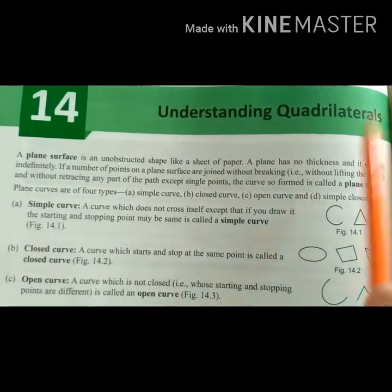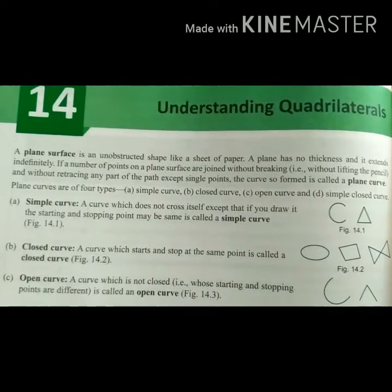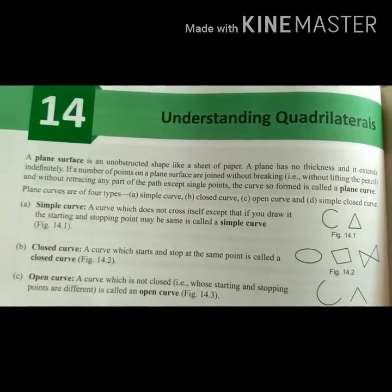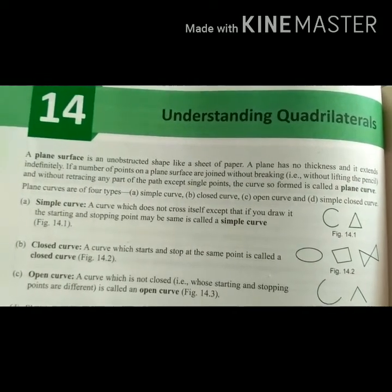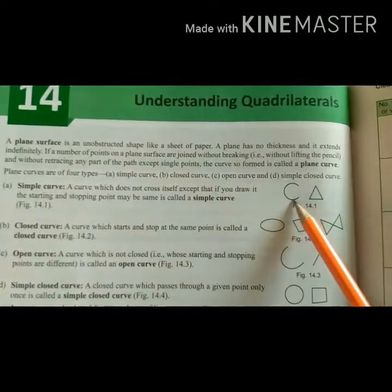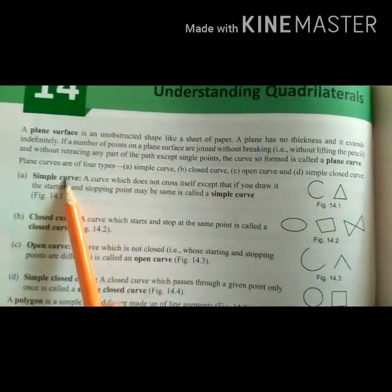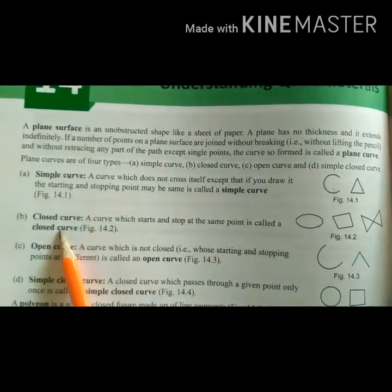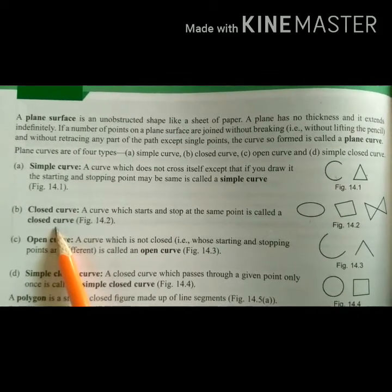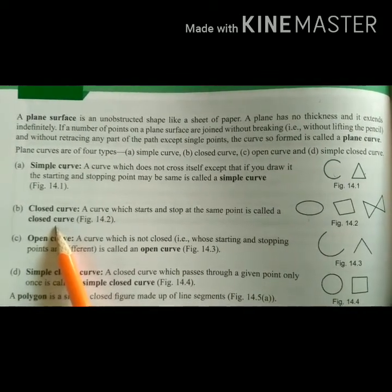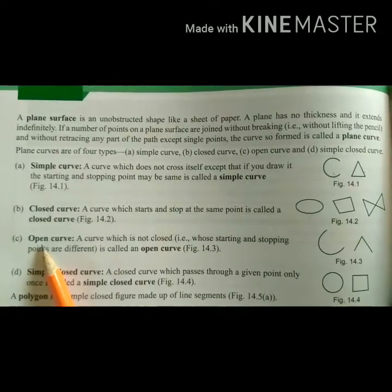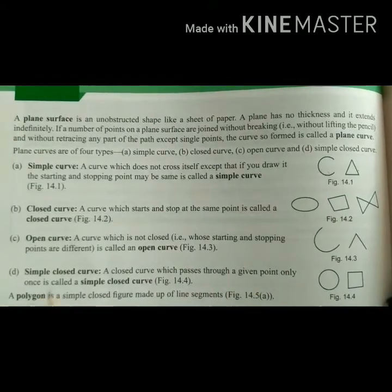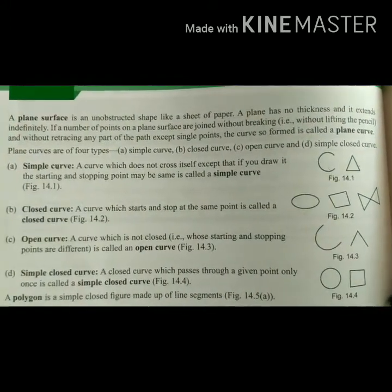Quadrilaterals are those figures which have 4 sides. First of all, what is a curve? A curve can be a simple curve, a closed curve, or a simple closed curve, as you can see in the figure. A simple curve is like this. A closed curve means a closed figure — for example, a triangle, quadrilateral, circle, etc. An open curve is one which has no joining point. Then there is a simple closed curve.